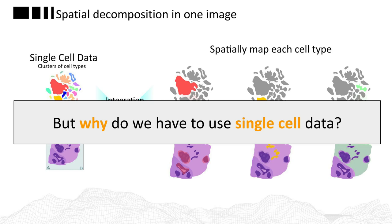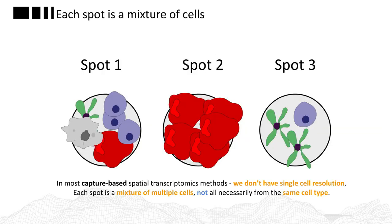That's a really good question. To understand this, we need to look at how this spatial data is actually designed or constructed. In most capture-based spatial transcriptomic methods like Visium, SlideSeq, or ST, we actually don't have single cell resolution, meaning that each spot — I'll be referring to capture locations as spots for simplicity — is actually a mixture of multiple cells, not all necessarily from the same cell type.